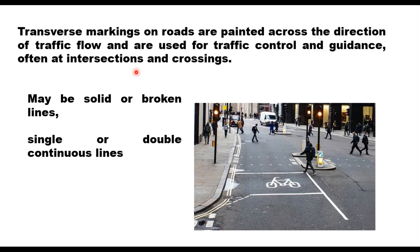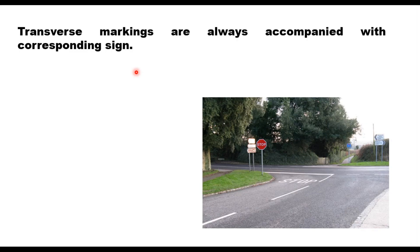They may be solid or broken lines, maybe a single line or double continuous line. These lines are generally white in color but may be yellow also in some cases. Transverse markings are always accompanied with a corresponding sign — if you are marking a stop line, then a stop sign should be installed before the stop line.